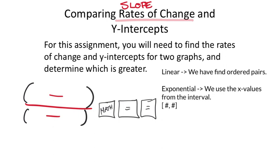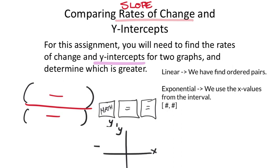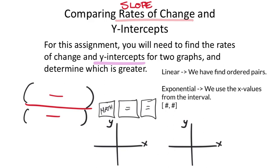We're also going to be comparing y-intercepts. Looking at two graphs—one might be linear, one might be exponential. The y-intercept is really just a visual check: can you look at the graph and find what the y-intercept is? The y-intercept is where the graph crosses the y-axis, the vertical number line.